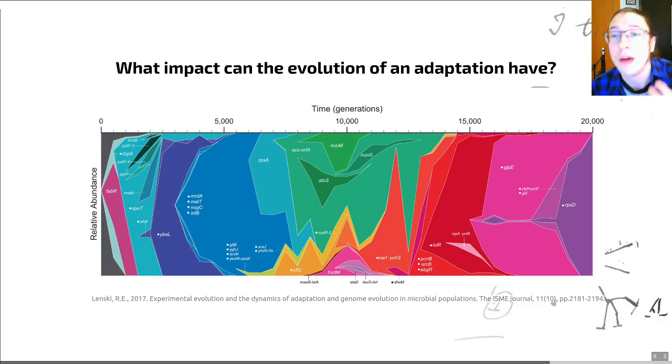It's really cool. So every day, 1% of the population is transferred to a new petri dish of growth medium. And this is done day in, day out. Every 500 generations, some of these organisms are frozen to create a fossil record of the bacterium at all points in this experiment.